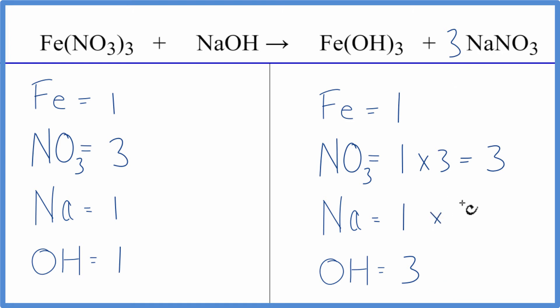And one times three, so now we have three sodium atoms. But that's okay because we could put a three as our coefficient in front of the NaOH. Then we'd have one times three. Three sodium atoms. Those are balanced. And our one hydroxide times three gives us three of those.